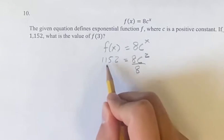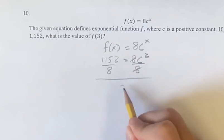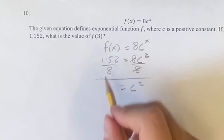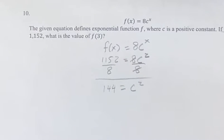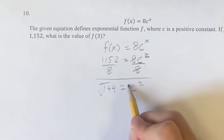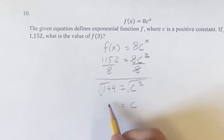So if we divide 8 on both sides, we're getting c squared on its own is equal to 1152 divided by 8. This is going to be equal to 144. Taking the square root of both sides, we get c is equal to 12.